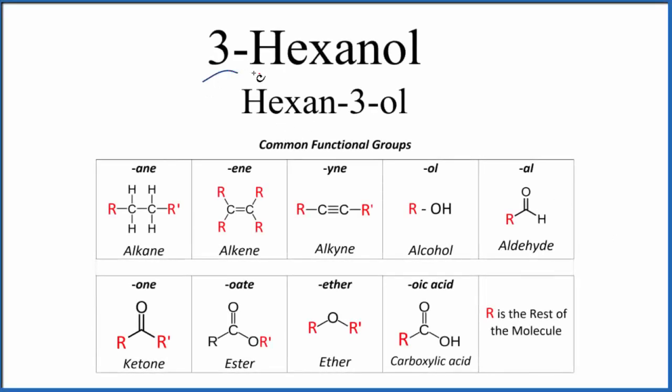Let's write the formula for 3-hexanol. This is also called hexan-3-ol. This is the preferred IUPAC name. The first thing we note is we have it ending in O-L. So when we see it ends in O-L, that means it's going to be an alcohol.